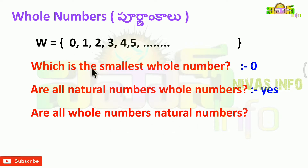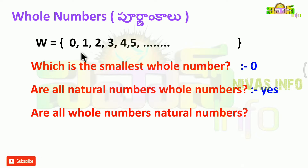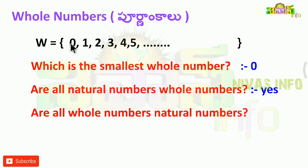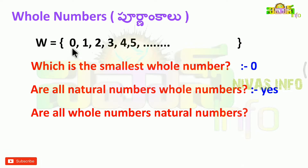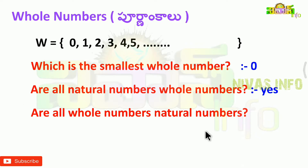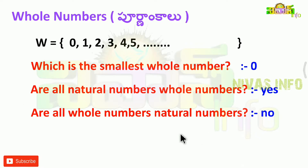What are whole numbers? Whole numbers include 0 and all natural numbers. 0 is not a natural number — natural numbers start from 1. So the statement 'all whole numbers are natural numbers' is false because 0 is a whole number but not a natural number.